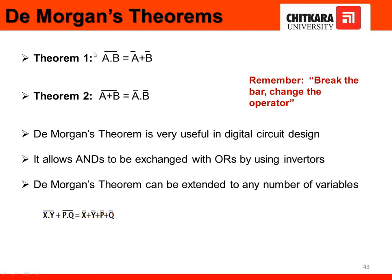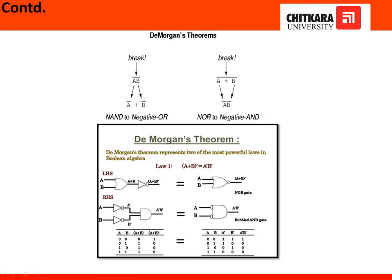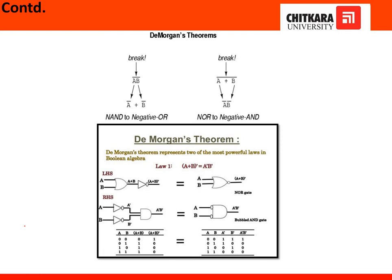From this theorem, we have to remember one thing: when we break the bar, it changes the operator. When we split the bar of A dot B whole bar, it changes the multiplication into plus. The same happens in reverse — whenever we split the bar of a sum, the plus sign changes into multiplication. The next slide shows how we can write A B whole bar as A bar plus B bar, and what its significance is.